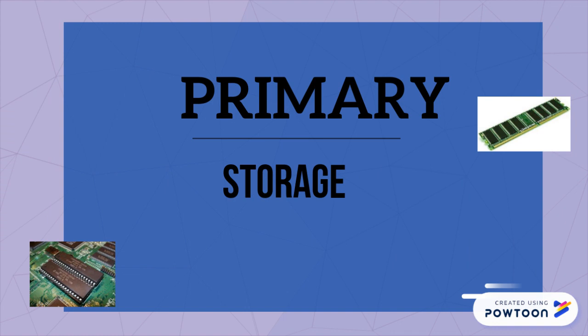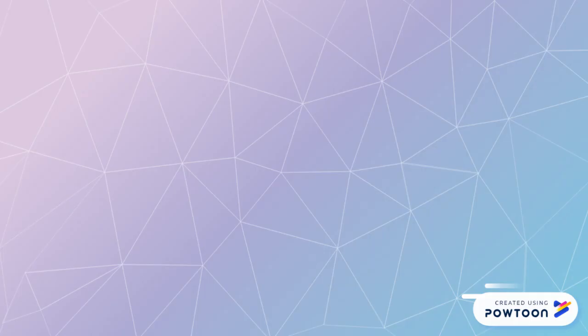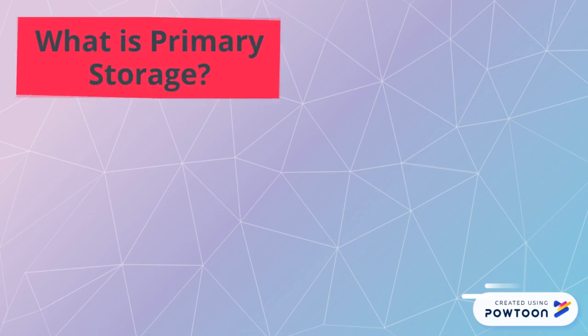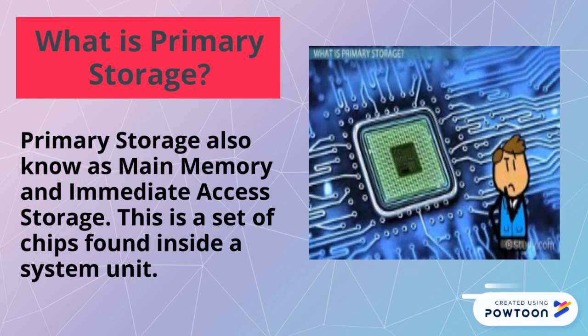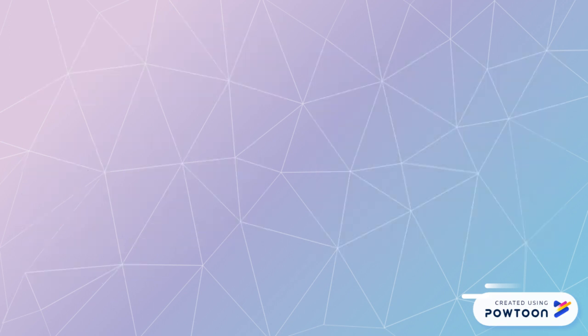Now we're going to look at primary storage, also known as main memory and immediate access storage. It is a set of chips found inside a system unit. Primary storage is going to allow you to have a temporary way to save or hold your information for a short period of time.